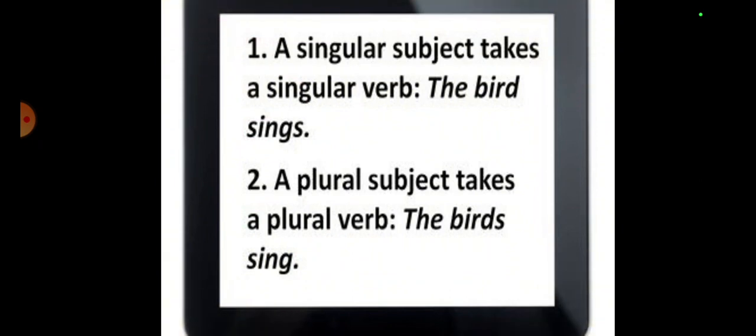A singular subject takes a singular verb. For example, the bird sings. If our subject is singular and we are making a sentence in simple present tense, then with the verb we have to use s or es according to the given word. If the subject is plural like birds, the birds, then we should not use s and es at all. For example, the boy sings, the boys sing.